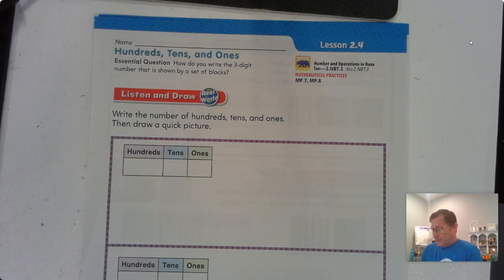So listen and draw the following problem. Sebastian has 243 yellow blocks. How many hundreds, tens, and ones are in this number? Why don't you go ahead and pause and see if you can fill in the hundreds chart and draw a quick picture of that, and then you can check your answer.